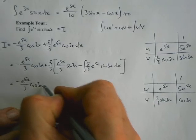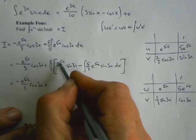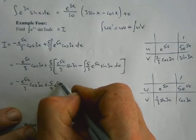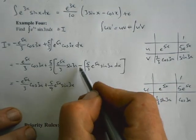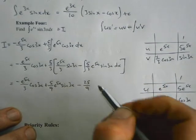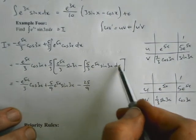So I have minus e to the 5x cos 3x plus 5 ninths e to the 5x sin 3x minus 25 over 9.